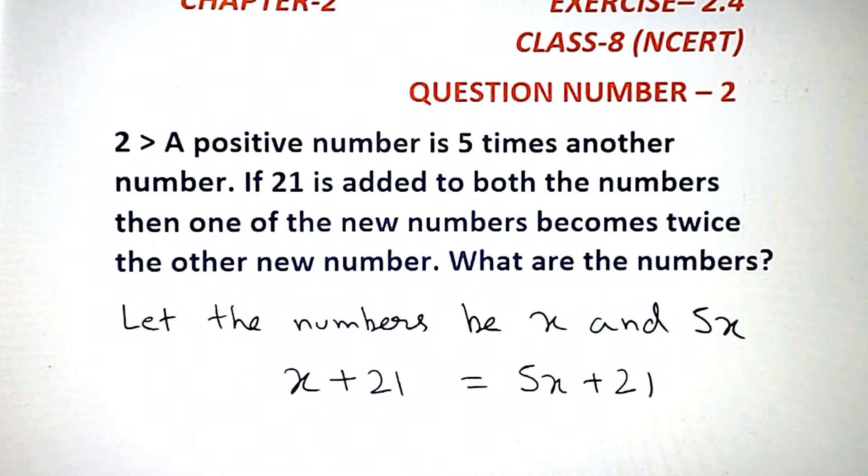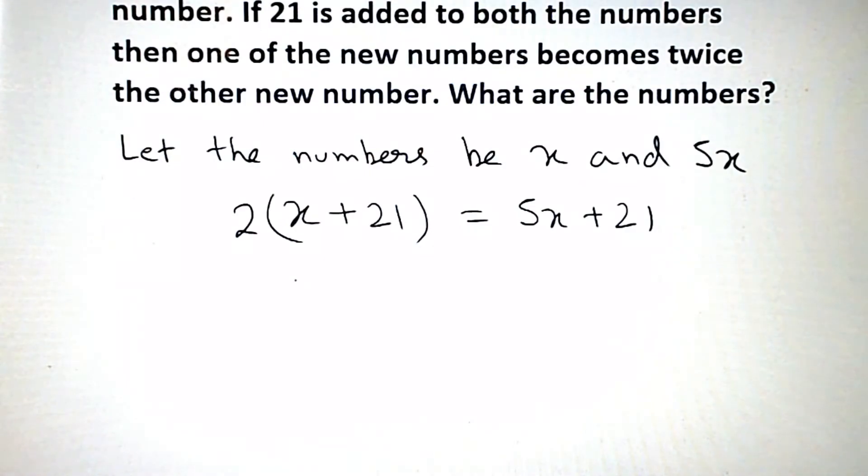Then one of the new numbers becomes twice, 2 times the other number. Then 2 times (x plus 21) is equal to 5x plus 21.